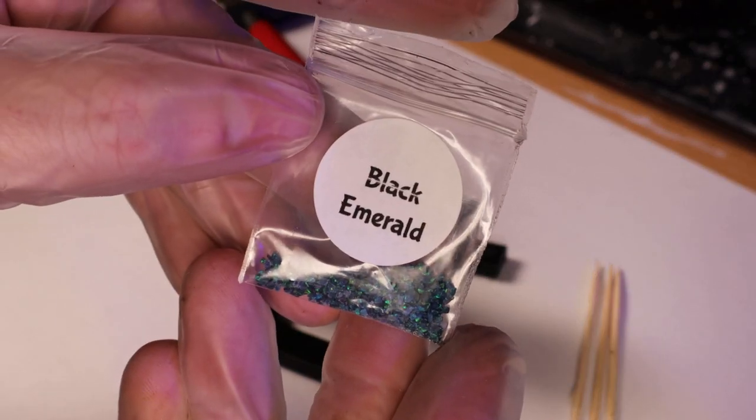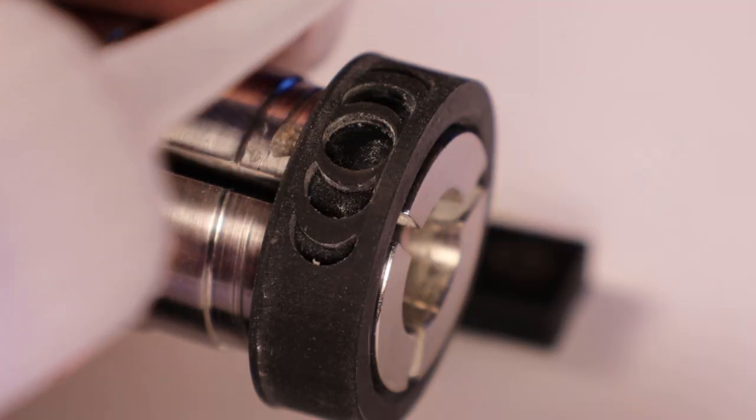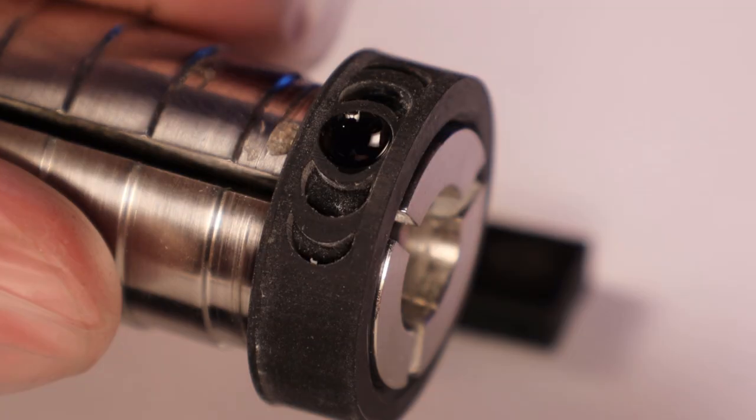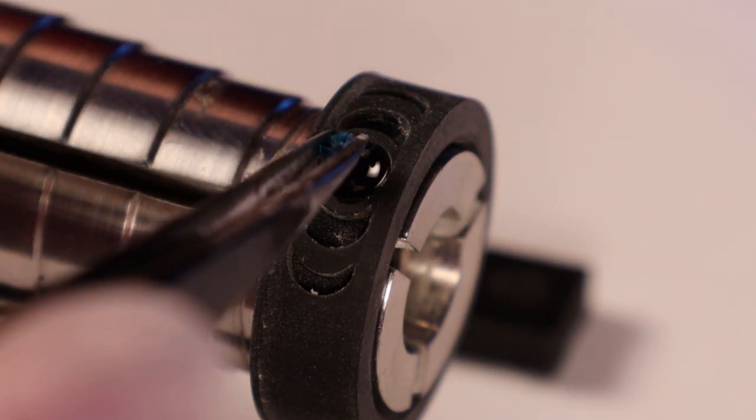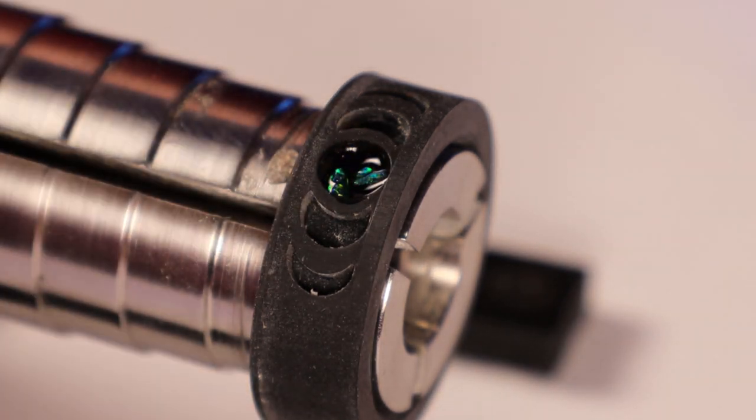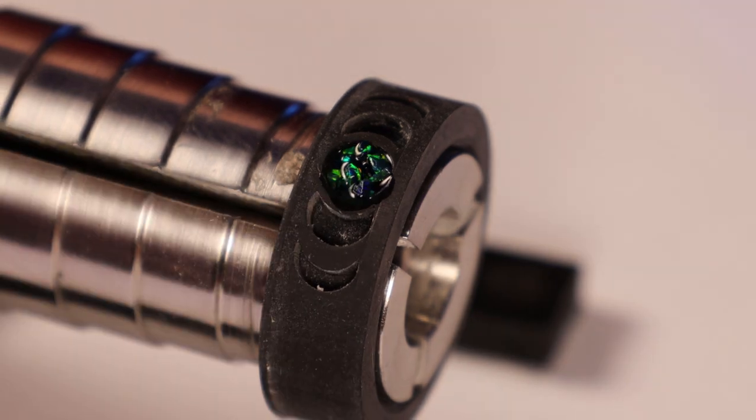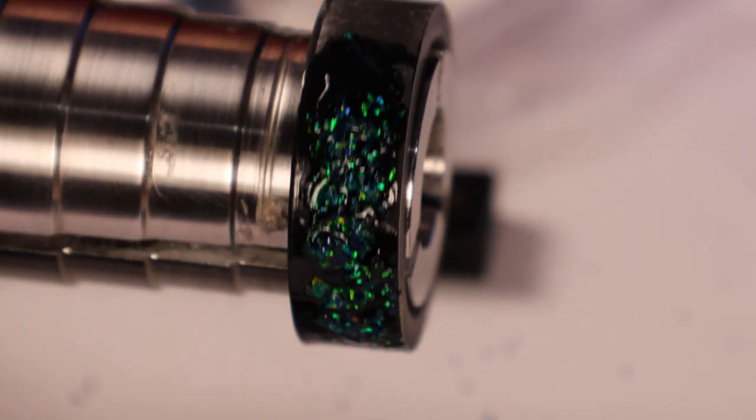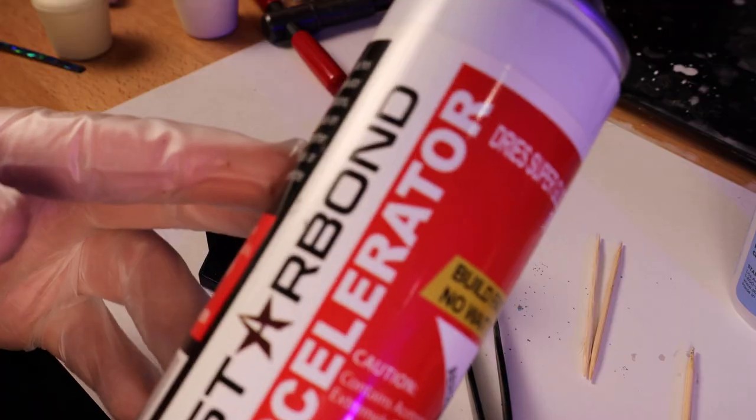For the inlay, I'm going to be using some black emerald opal along with some thin CA glue. Both the opal and the glue did not come in the box that I got in this video, but they are what I normally use for making my inlay rings. So I wanted to see how they would hold up and work with the resin ring core. And so far so good, but now I need to cure this glue. I'm just going to do that using some spray-on accelerator.